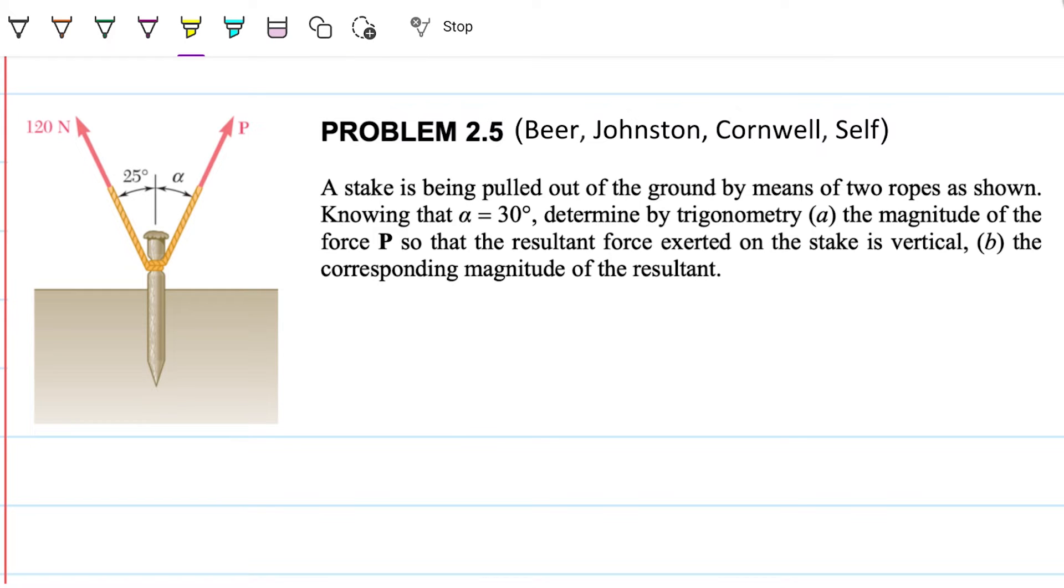So the first part here is what is P, what is this force P if the resulting force that is a combination of P plus that 120 newtons is vertical. In other words, if by combining these two forces, my resulting force is only going upwards, so that the two horizontal components cancel each other. That is, they are equal in magnitude but have opposing directions. That's what that special sentence is saying, the resultant force at stake is vertical. So this vertical is a key word here.